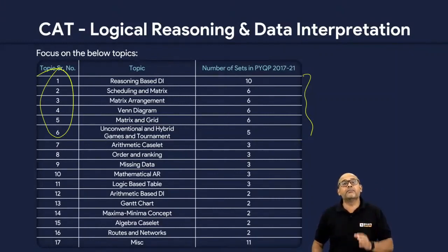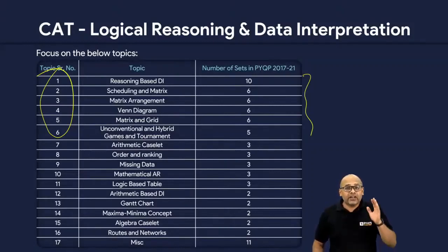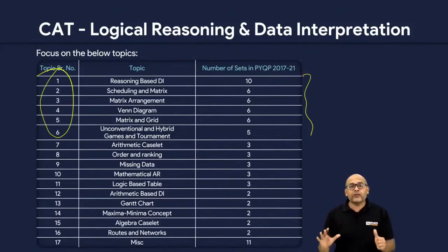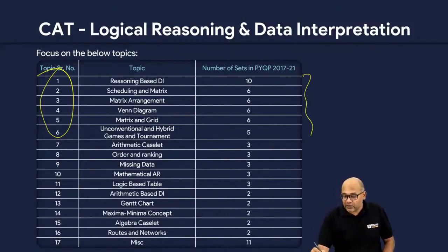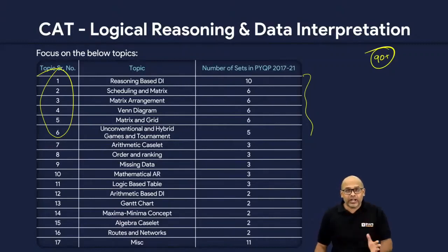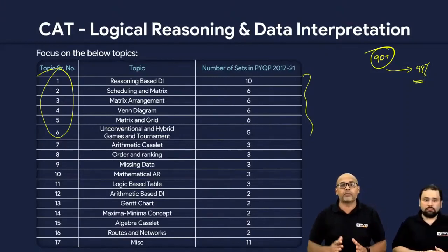These 6 topics have been asked the maximum number of times — the highest frequency over 5 years. I would guarantee that if you become comfortable in these 6 and only 6, you will get at least a 90-plus percentile. Just be comfortable in them, and if you are good at them, you will end up getting a 99 for sure. I have data to prove that.